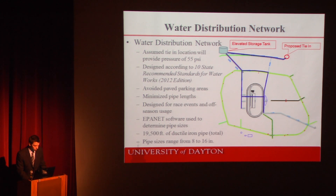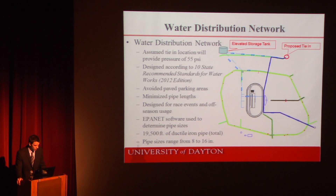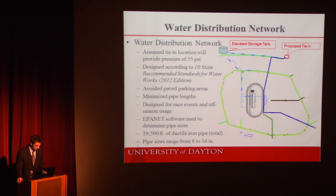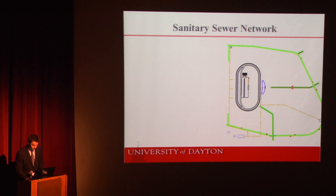The design incorporates a loop system to increase efficiency. Pipes were sized using maximum daily demands for the grandstands and normal design flow rates for the rest of the buildings, with fire flows also applied. Pipes were also sized using EPA NET software, provided by the Environmental Protection Agency. In all, the proposed system contains approximately 19,500 feet of ductile iron pipe, with pipe sizes ranging from 8 to 16 inches. The sanitary sewer network was designed as a gravity-fed system, with pipes sized according to a variation of Manning's equation.